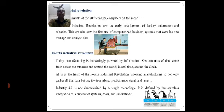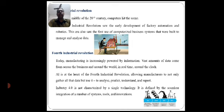The third revolution started in the middle of the 20th century. This was the first time computers came into the picture in the industrial revolution. The third industrial revolution saw the early development of factory automation and robotics. It also saw the first use of computerized business systems that were built to manage and analyze data, with computers being introduced in the early 20th century.